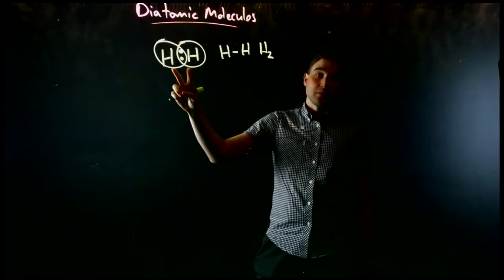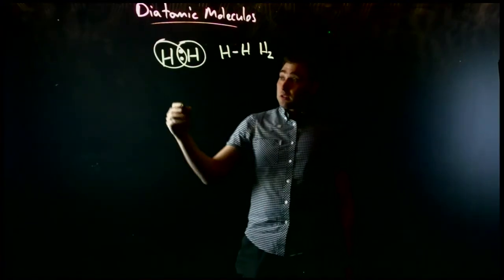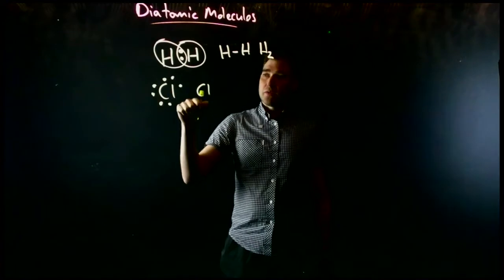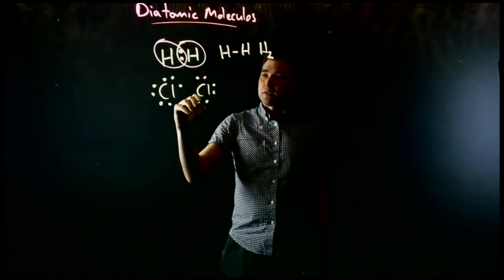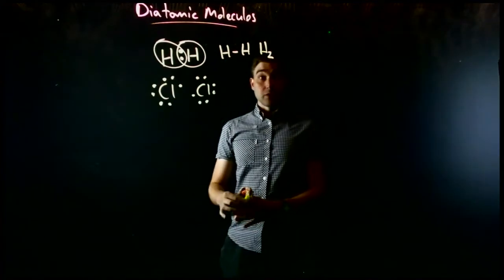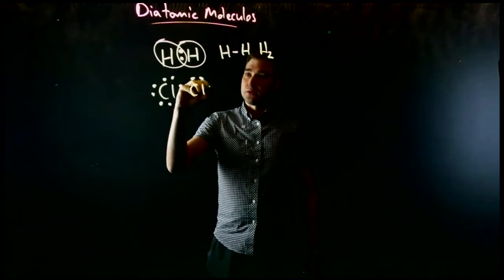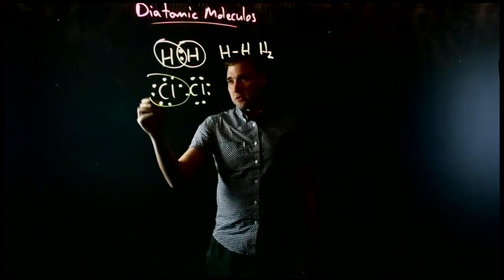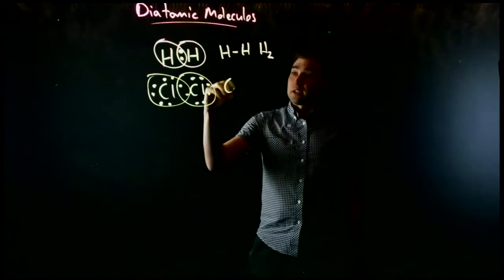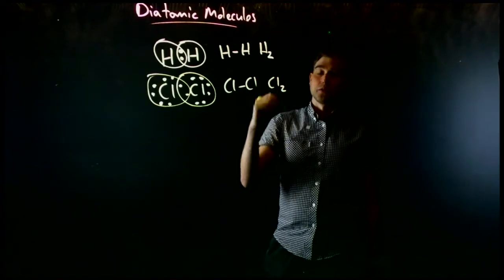This is a diatomic molecule made up of two atoms; it's also linear, which means it's straight. If we look at chlorine gas, chlorine is in group 7 with 7 electrons in its valence shell. We put another 7 electrons on the other side and we can see we're going to share two electrons. Drawing the circles around both chlorines, we can see we're sharing one pair of electrons in the middle, so we get Cl–Cl. This single line means one pair of electrons being shared, giving us the formula Cl2.